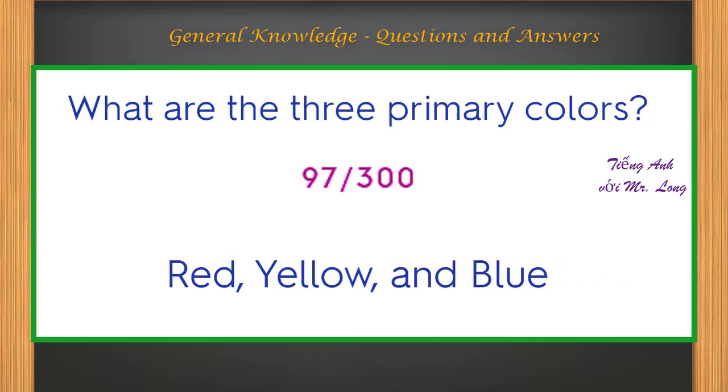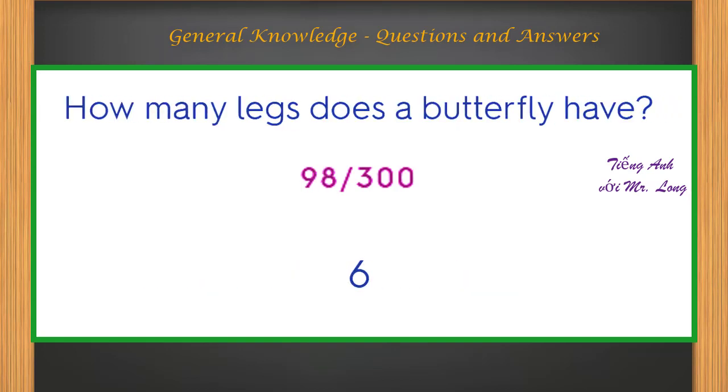What are the three primary colors? Red, yellow, and blue. How many legs does a butterfly have? Six.